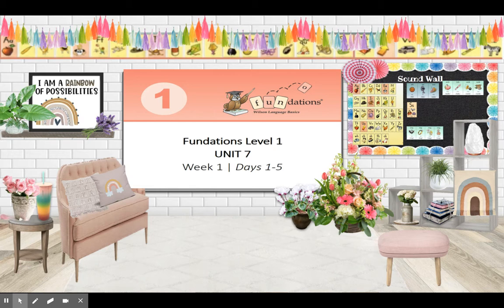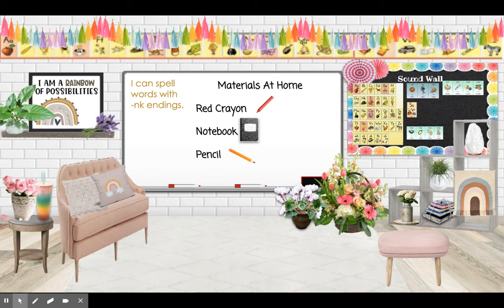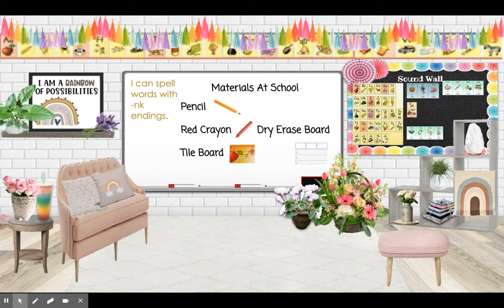Hi, first grade friends, let's get ready for our Fundations. The materials you will need at home are a red crayon, your notebook, and a pencil. The materials at school you'll need are a pencil, a red crayon, your dry erase board, and a tile board. Today's objective is: I can spell words with NK endings.